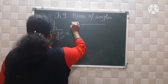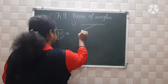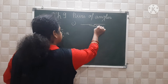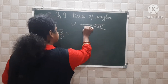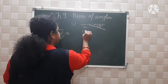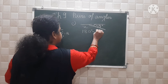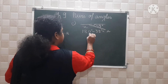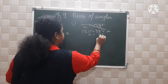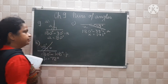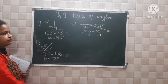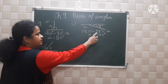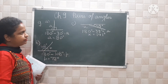For part C, the angle is 39 degrees and the unknown is X. So 180 minus 39 degrees equals X. X is equal to 141 degrees — because 10 minus 9 is 1 and 17 minus 3 is 14, giving 141 degrees.